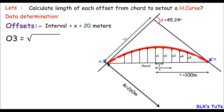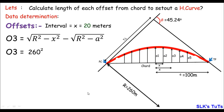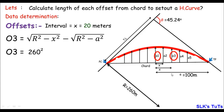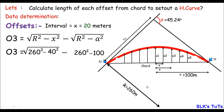For Offset 3, x is the distance between the middle offset (Offset 1) and Offset 3, which is 40 meters (20 + 20). So O3 = √(260² − 40²) − √(260² − 100²) = 16.9 meters.